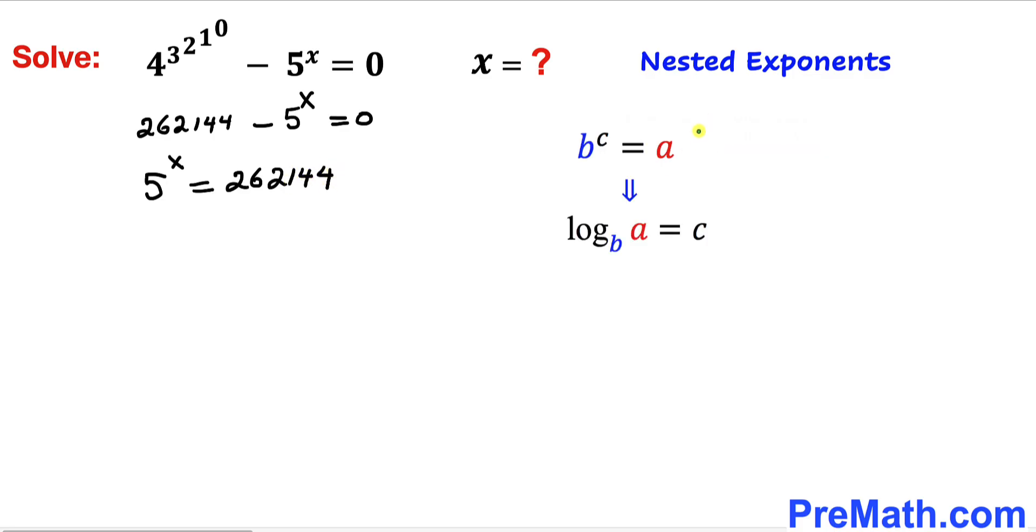And now let's recall this basic conversion rule from exponential form to logarithmic form. If we have b^c = a, then we can write this in logarithmic form as log_b(a) = c.